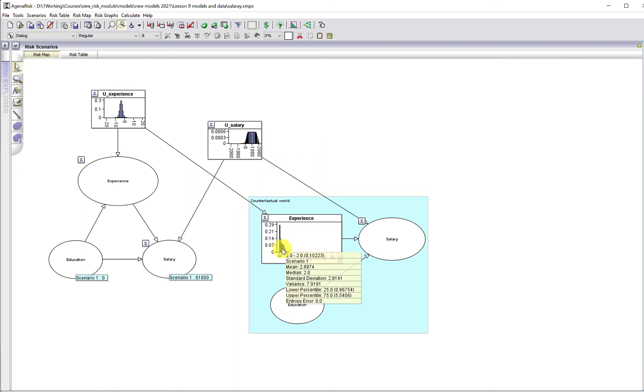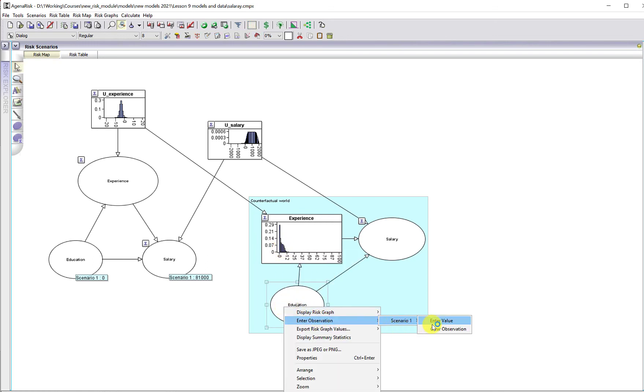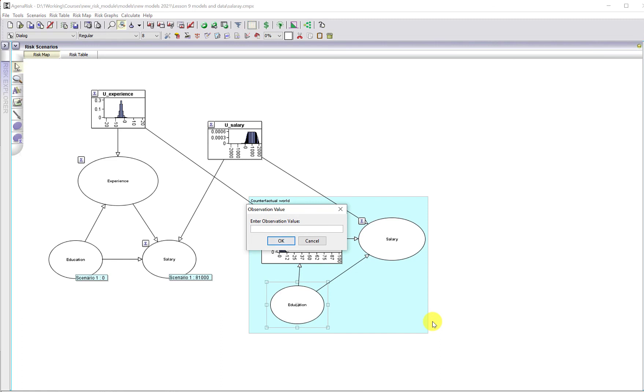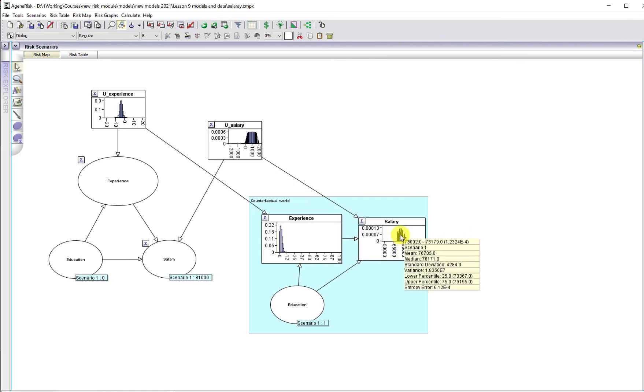So now when I enter the observation in the counterfactual world one, and when I run the model again, let's see what it's predicting for salary, it's predicting slightly higher salary because of the slightly higher prediction here because of the uncertainty. Most importantly, salary is a distribution whose mean is 76,700 and whose lower and upper percentiles of 73,000 and 79,000.